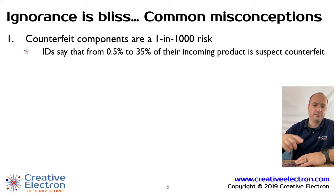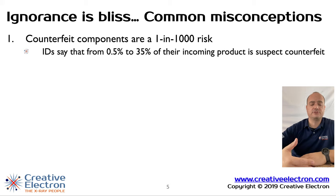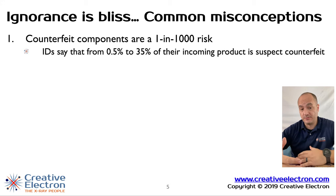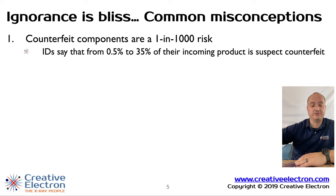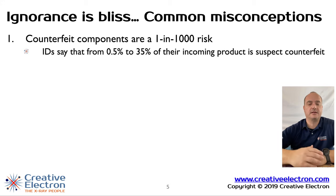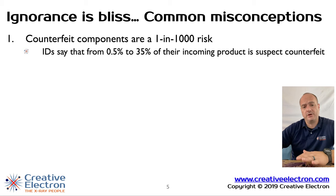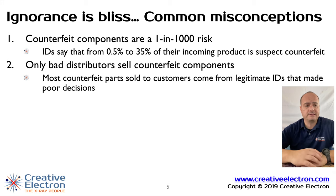Because of the way the supply chain works, a contract manufacturer with excess inventory that is mixed with good and bad components can ship that back to a franchise or authorized distributor. If they're not checking for counterfeit components, that mixed inventory can be resold. The risk is everywhere — if you want to make sure you don't have it, you have to check what you buy and sell.